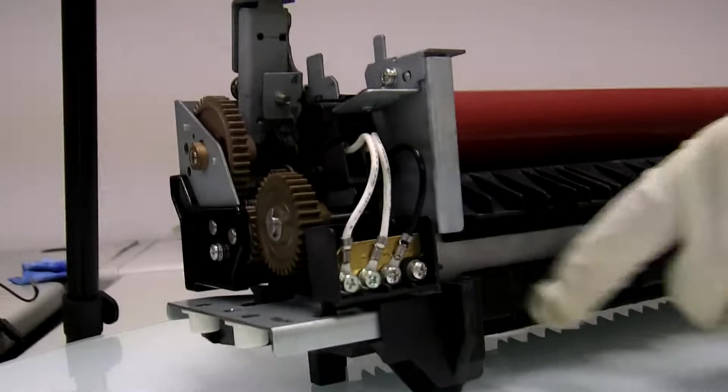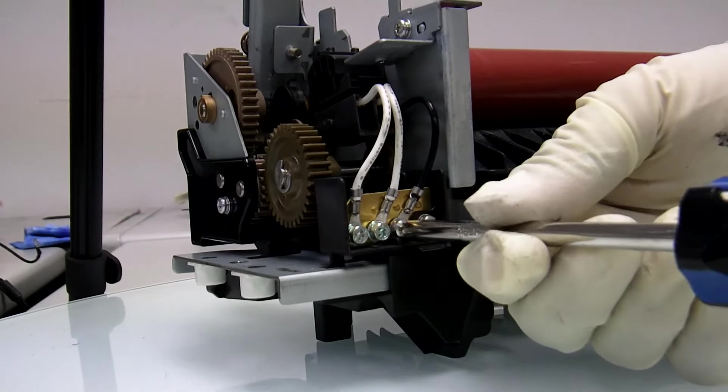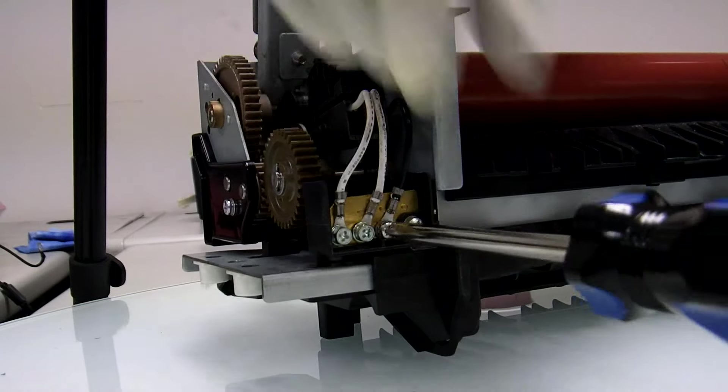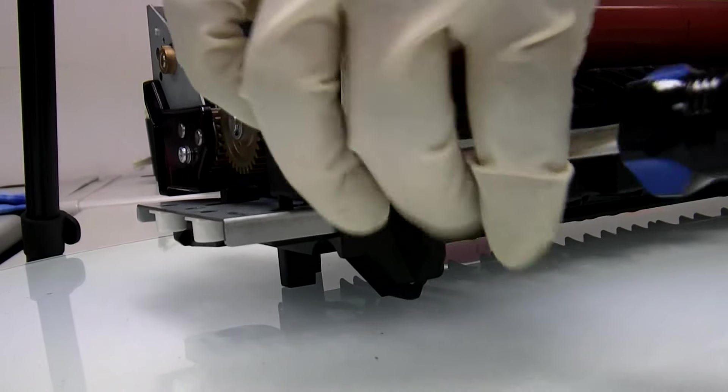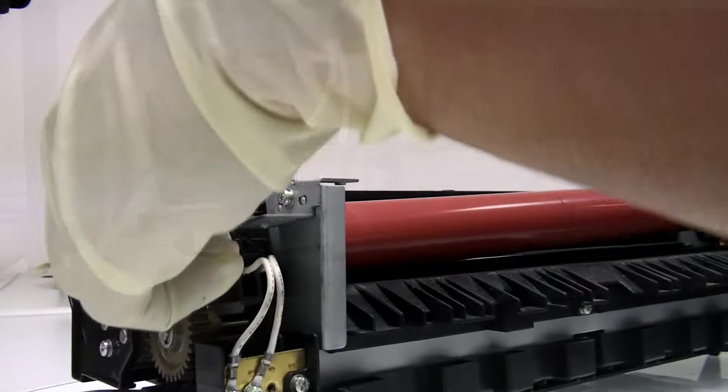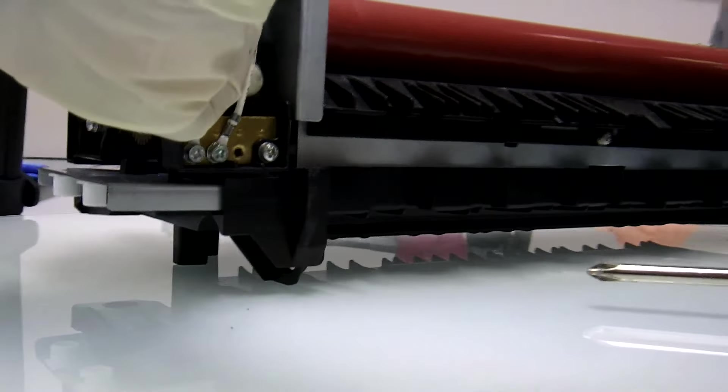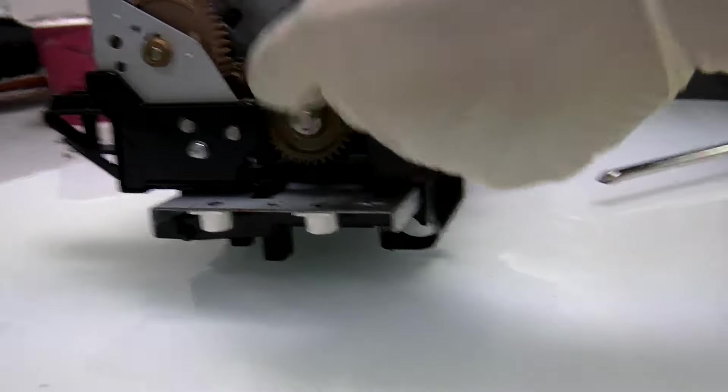Now let's unscrew the ground cable and release the other black connector from the other side. Now all you have to do is just lift up the fixing film assembly up.